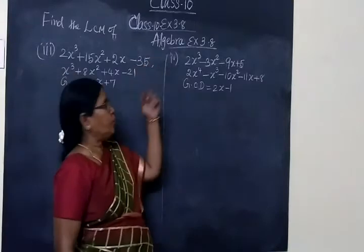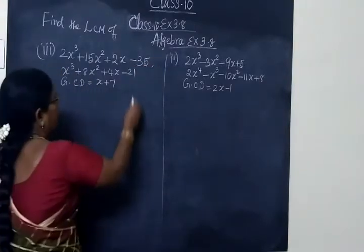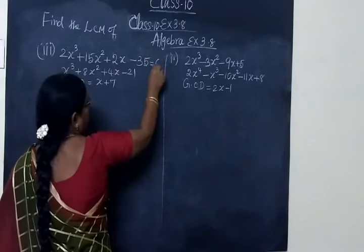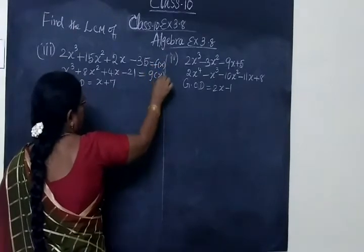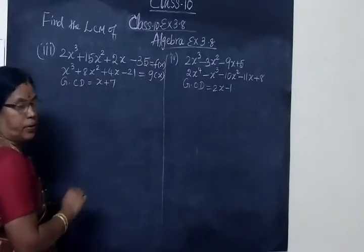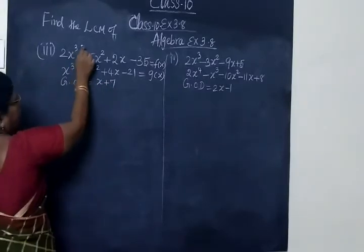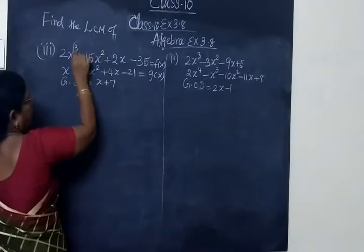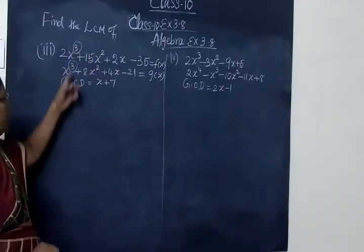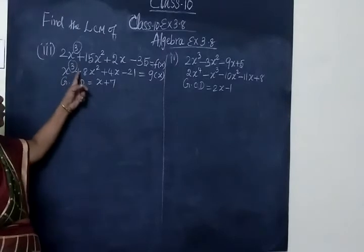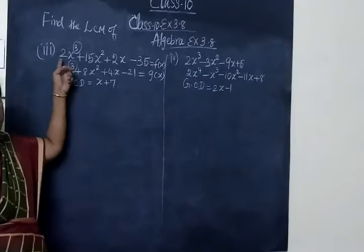Now, algebra. This is a 3.8 layer, third sum. The third sum: F of X is given, this is G of X, and this is the GCD given. If you are finding the degree of the polynomial — is the degree of the polynomial 3? This is not degree 3. In a random way, the same degree is there, but the leading coefficient of F of X is 1 and the leading coefficient is 2.